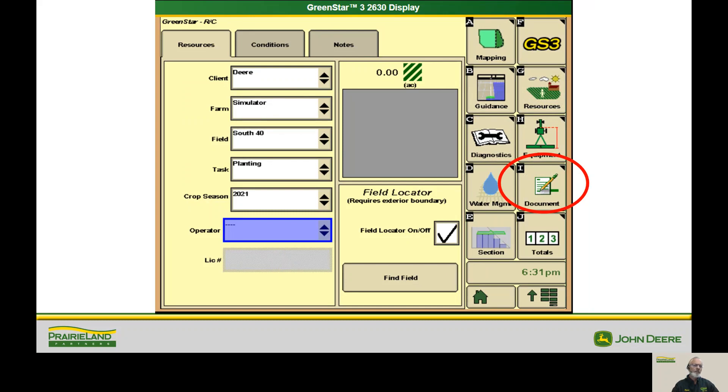The next question that comes up often is it's not documenting or blue coverage isn't working. So I want you to hit the document button, the piece of paper with a pencil, and let's look through all of our settings on here. First of all, of course, you need to have the client, farm, and the field and the task is planting. And by the way, put in the crop season. It's important to keep track of by the crop season. The crop season changes right after harvest. Anything you do after harvest is for the next year.